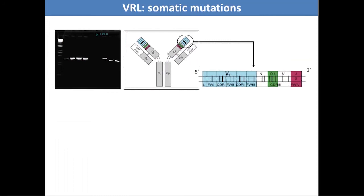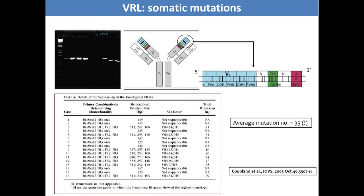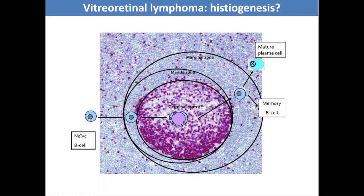I also had the opportunity to look at the somatic mutation pattern of vitreoretinal lymphomas and demonstrated that they had a massive number of mutations present within the variable region, which was confirmed by another group. Essentially, this confirms the stage of differentiation at which the tumour arises — we think it is a post-germinal centre B cell which has undergone a massive number of hypermutations within the germinal centre and then pushed through as a clone.